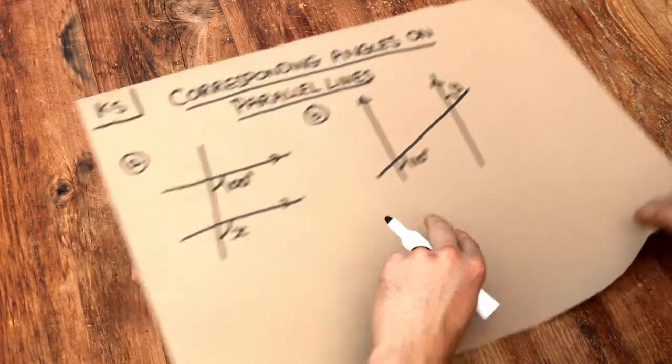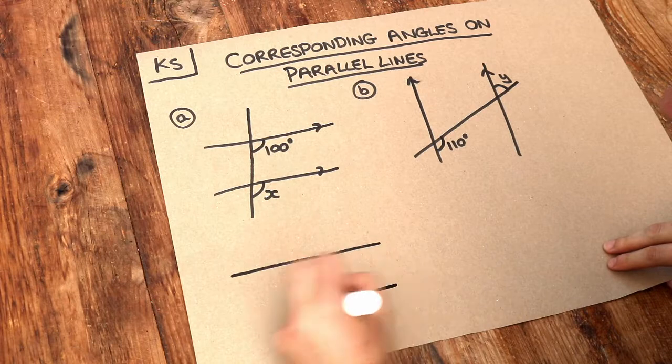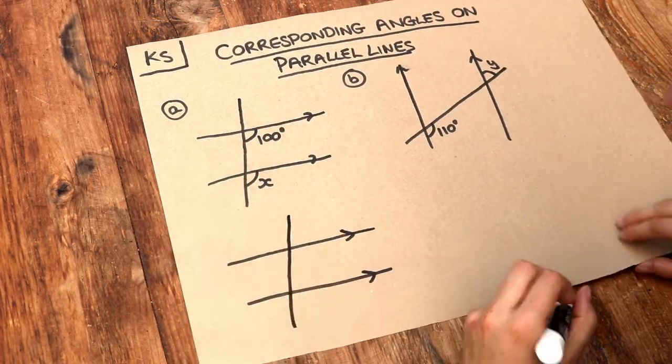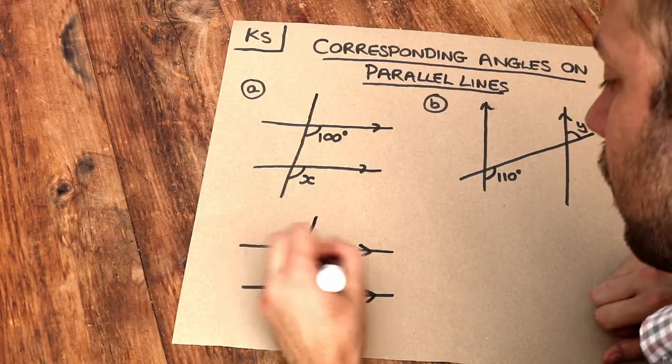Now we have corresponding angles if we have two parallel lines and we've got a line that connects those two and we have a sort of F shape.